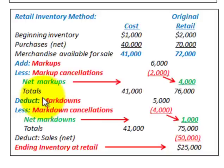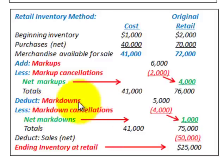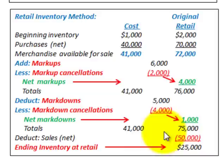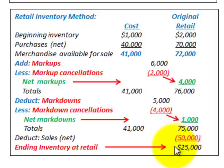Next we deduct markdowns. Say we had $5,000 in markdowns and $4,000 in markdown cancellations, giving net markdowns of $1,000. Subtracting the net markdowns of $1,000 from the $76,000 total gives $75,000. With sales for the period of $50,000, we subtract that from $75,000 to arrive at an ending inventory at retail of $25,000.